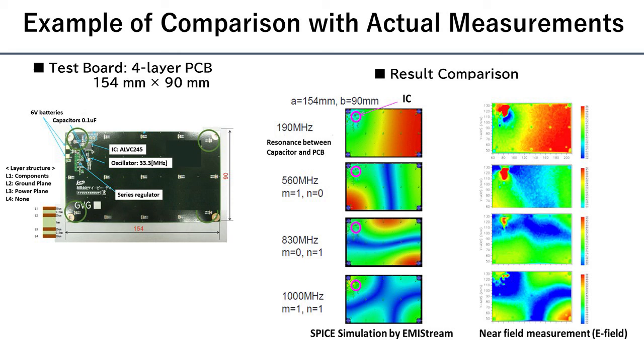The red part in the color gradation indicates a high swinging voltage area. You can see that EMI stream resonance analysis achieved results similar to actual measurements.